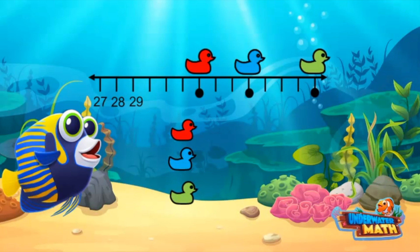The last tick mark labeled is 29. We start counting from 29 until we reach the red duck. 30, 31, 32, 33. The red duck is located at 33.